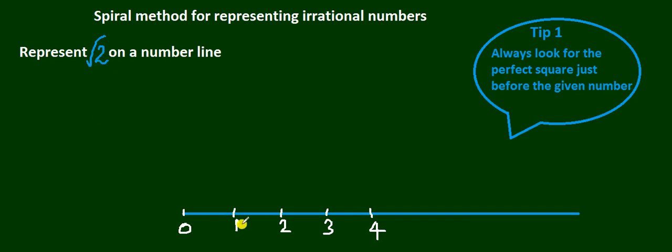To start with, I have my number line drawn here. The tip you need for this method is: whatever number is given to you, always look for the perfect square just before the given number. Which is the perfect square just before 2? It is 1.